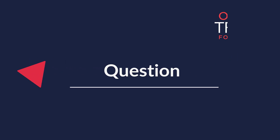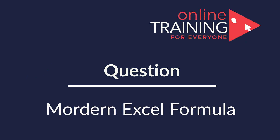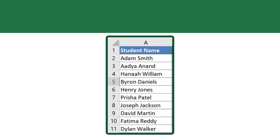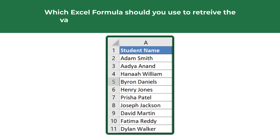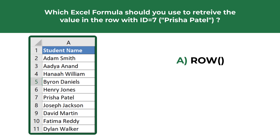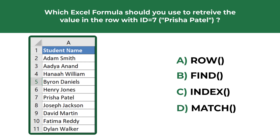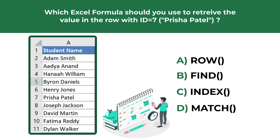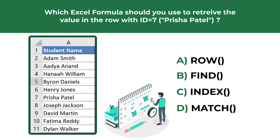Here's a question which tests your knowledge of modern Excel formulas. You are presented with a list of student names in column A, and you need to decide which Excel formula you should use to retrieve the value of the row with ID 7. The value in this row is Prisha Patel. You have four different choices: Choice A — formula ROW, Choice B — formula FIND, Choice C — formula INDEX, and Choice D — formula MATCH. Give yourself 10 to 20 seconds and see if you can pause this video to come up with the right solution.